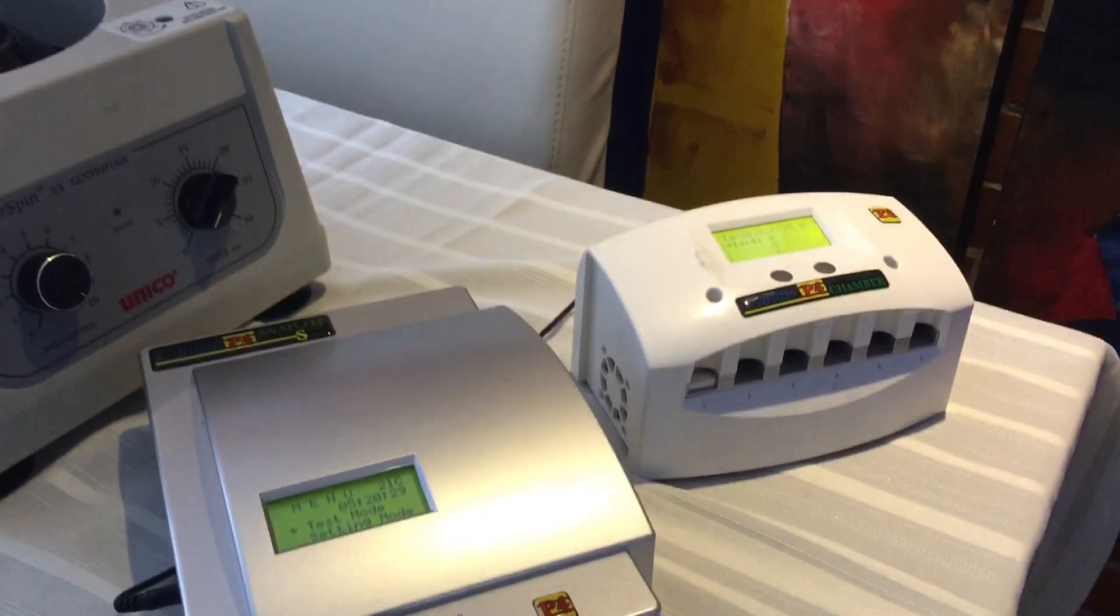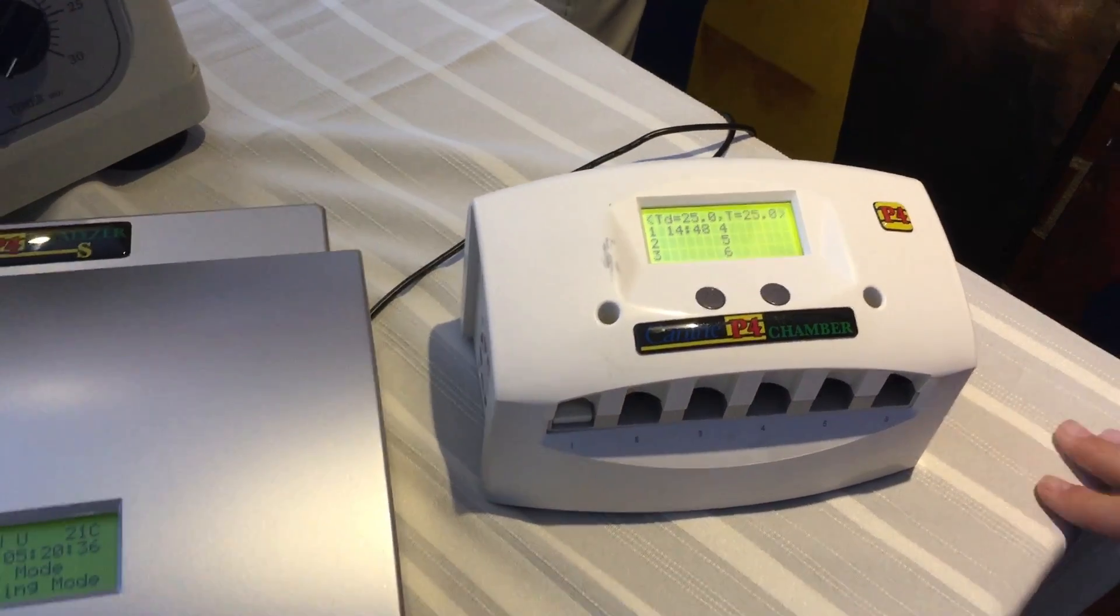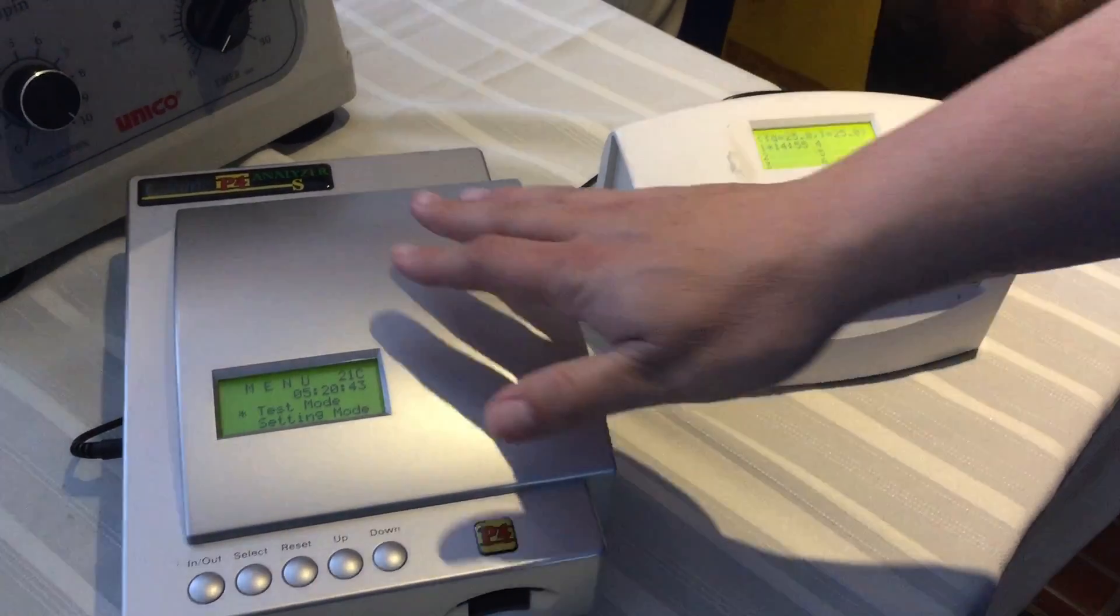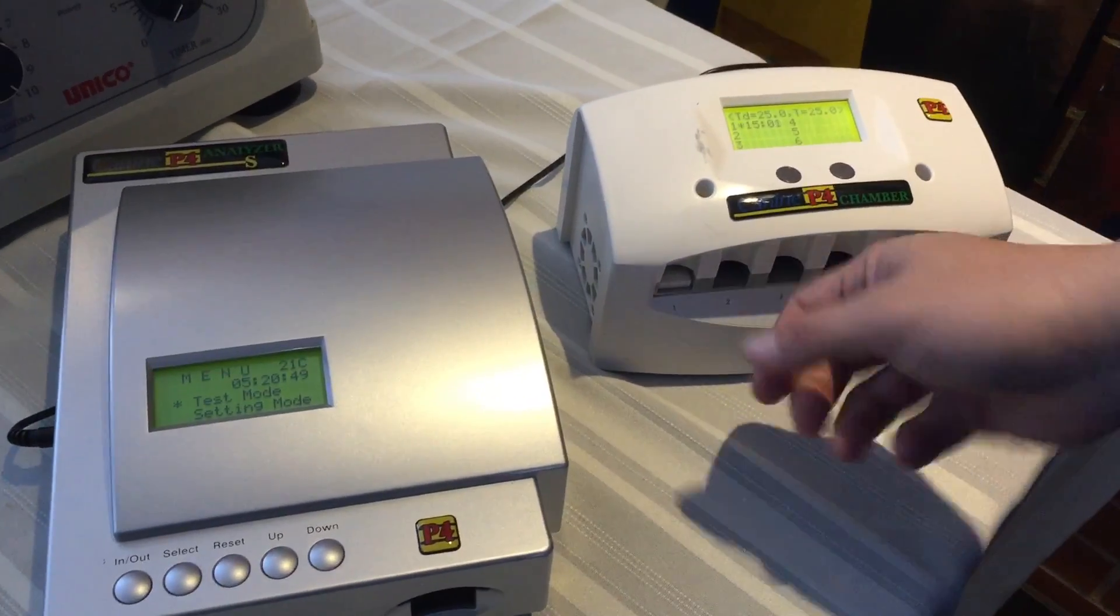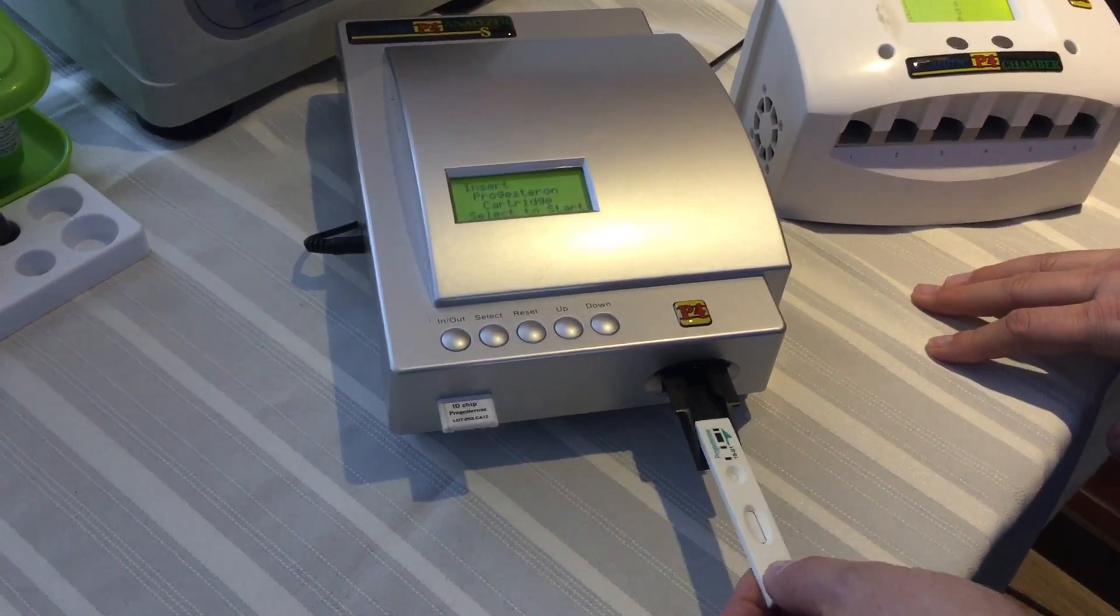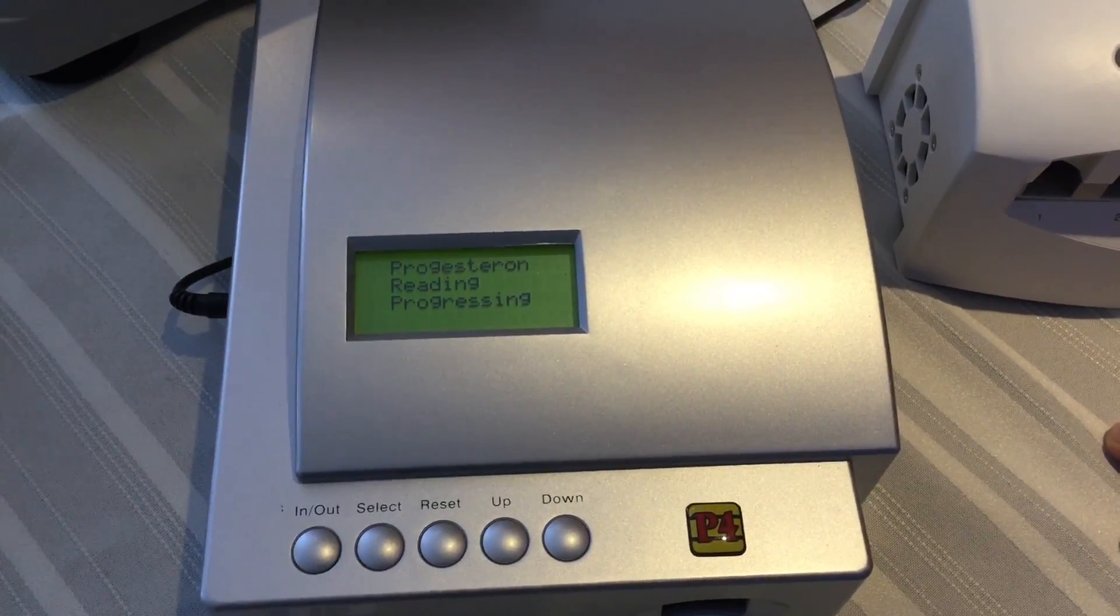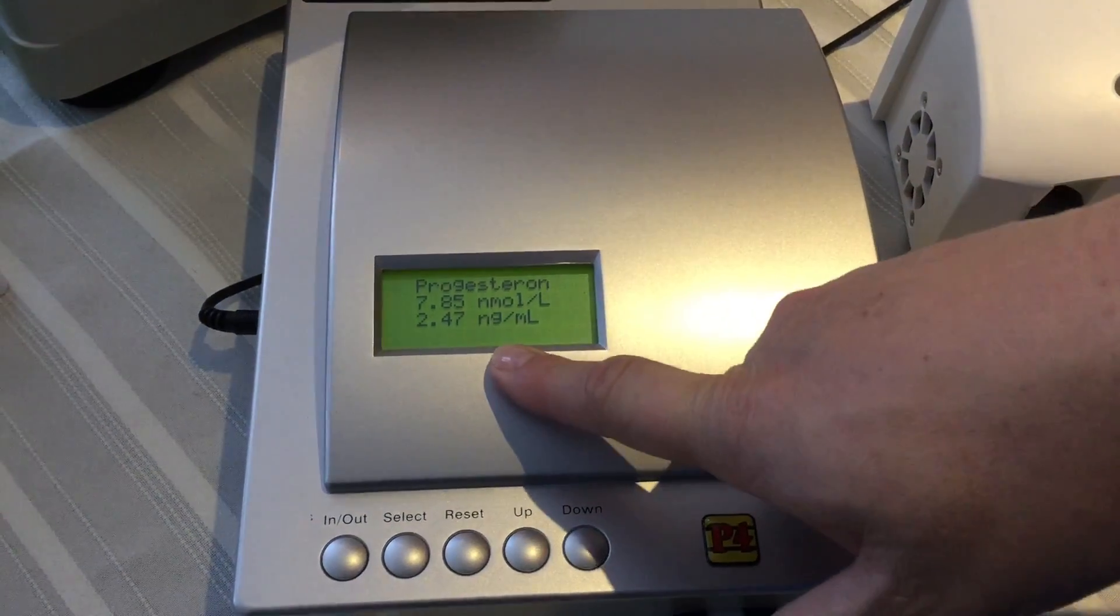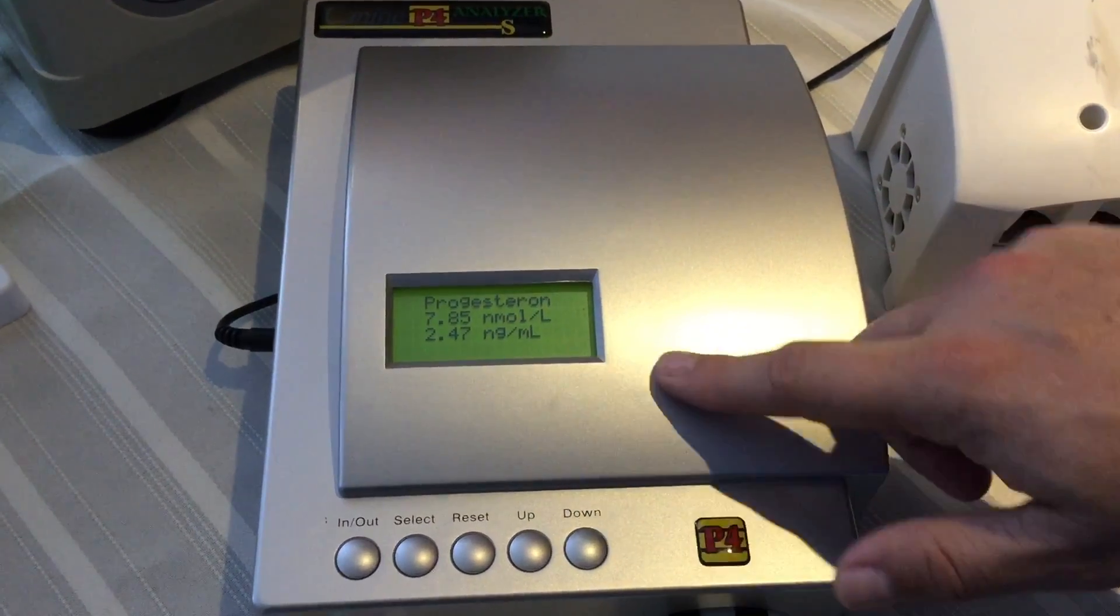So, the 15 minutes are almost up. Yesterday, the progesterone levels were at 1.48 and what I'm looking for is 5 nanograms, 5.0. So, as soon as the machine alarm goes off, we're going to put it in the P4 analyzer and see the rise. You press select. As you guys can see, today is at 2.47. So, the Draminsky was right. Yesterday, it was 9.70 in the Draminsky and it dropped to 3.80.